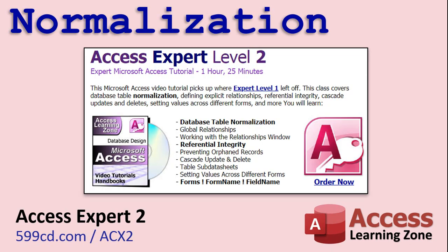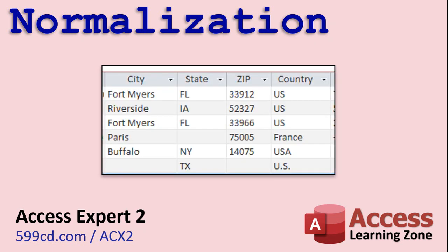Well, Louis, this brings up a topic called database normalization. I spent a lot of time covering this in my Access Expert Level 2 class, along with referential integrity. But normalization basically says you don't want to have data in your database in any table that repeats itself. Take a look at this customer table — we've got U.S., U.S., U.S. repeating, but then someone types in U.S.A. And if I want to generate a report showing all customers from a particular country, now I've got to deal with misspellings.